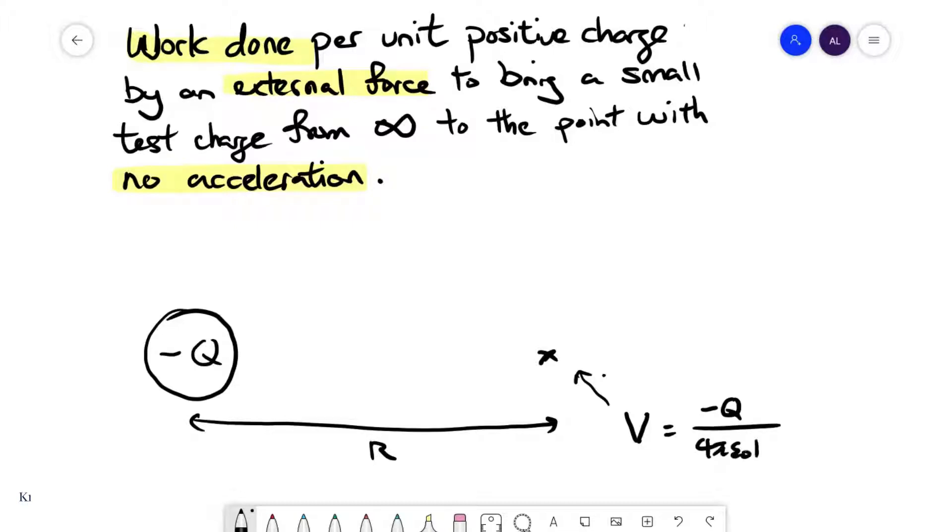Negative charges create negative potentials. Positive charges, so if I had changed this to plus Q, would create positive potential. To understand this, we have to look at the definition of electric potential, which is the work done per unit positive charge by an external force to bring a small test charge from infinity to the point with no acceleration.